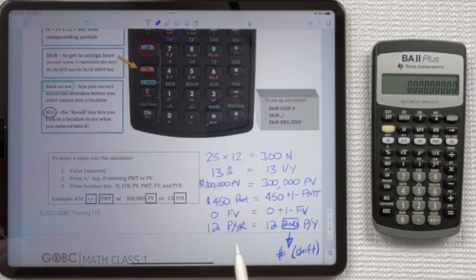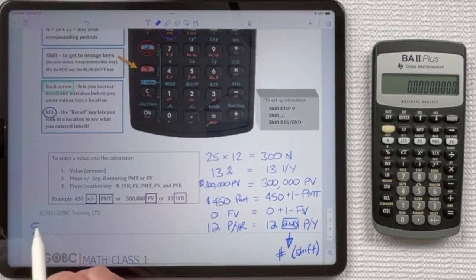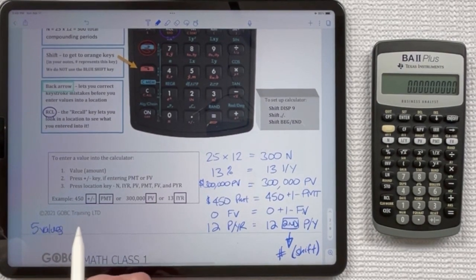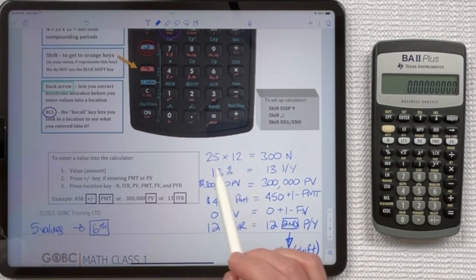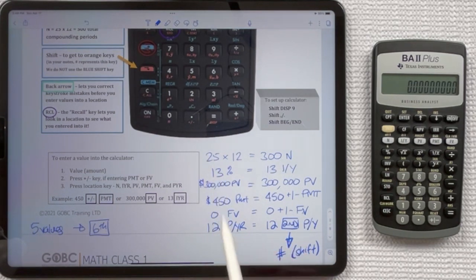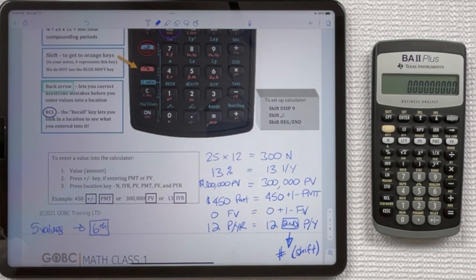I'm just going to show you how to enter something into each one of the locations. Now remember, you're always entering five values to get the sixth. So you're going to enter five values and you're going to push the button for the sixth. You would never be entering six into the calculator for the same question. Just want to mention that before we start.